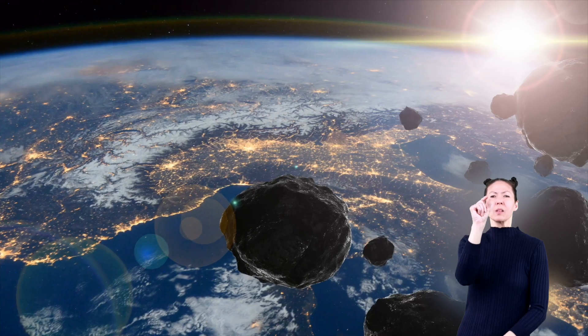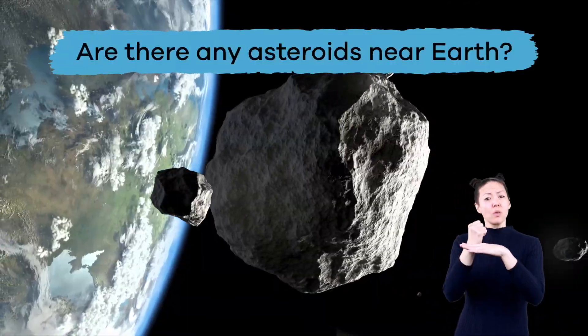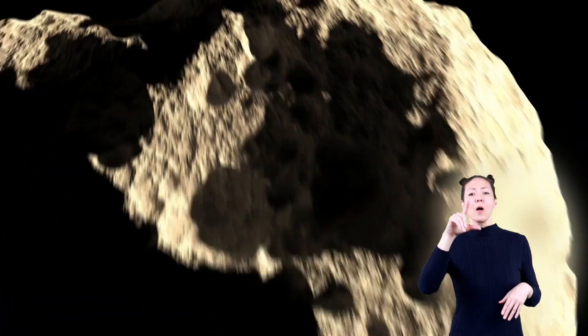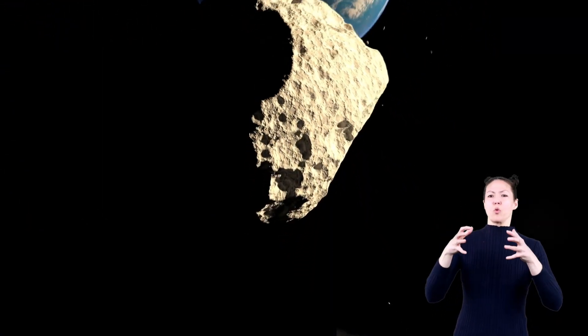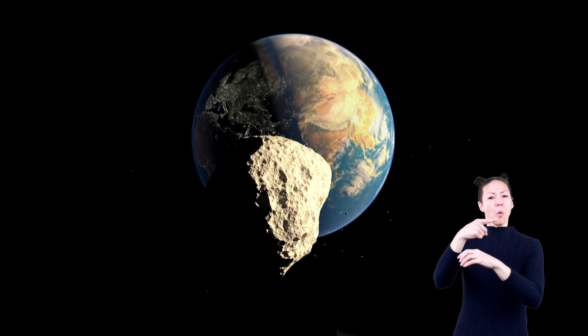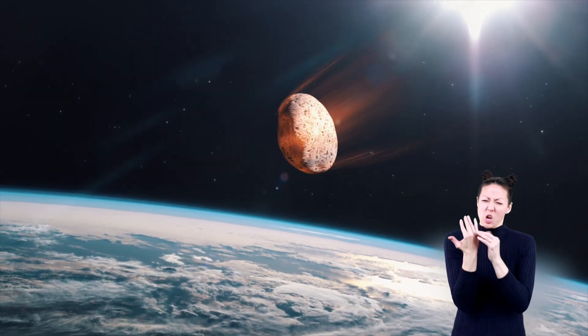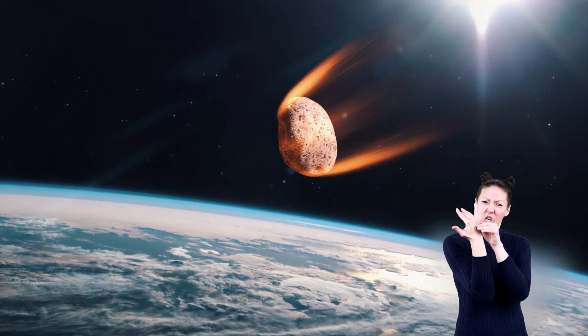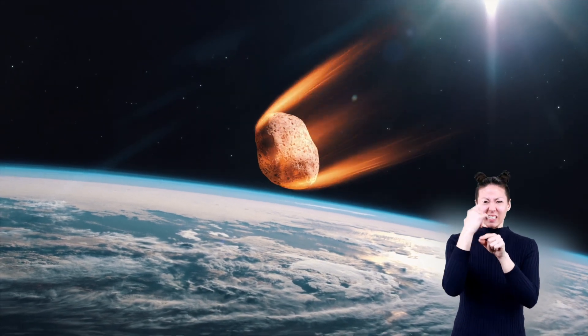In fact, you might even mistake it for a star. Are there any asteroids near Earth? Apollo asteroids are a large group of asteroids near the Earth's orbit. Most of these asteroids burn up in our atmosphere, causing powerful blasts high up in the sky.